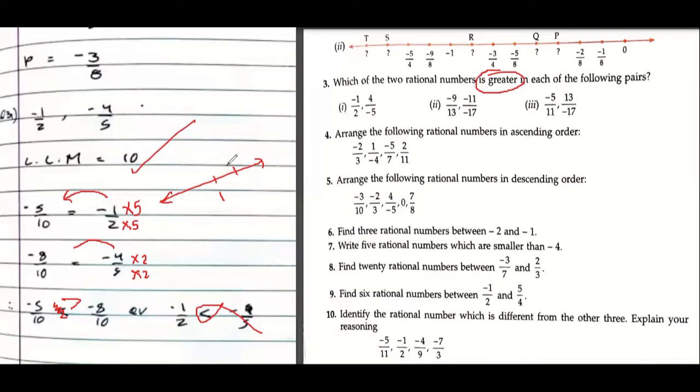So if this is -1 and this is -2, now if I stand in between, which one will be on the right? -1. Hence, -2 is smaller than -1. Is this clear? I hope you have done the correction.